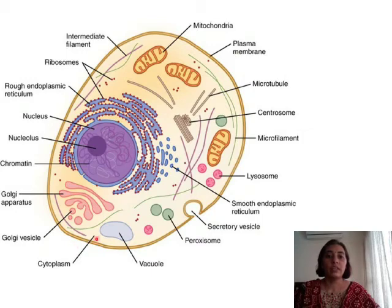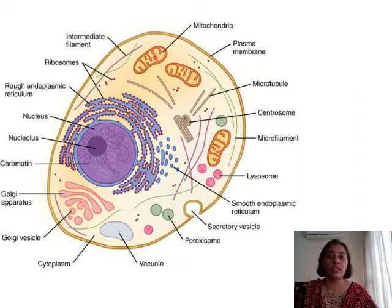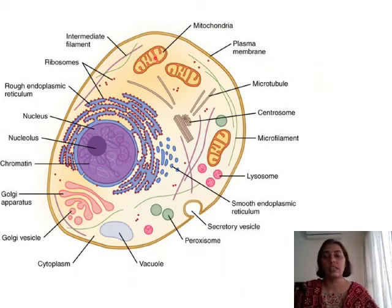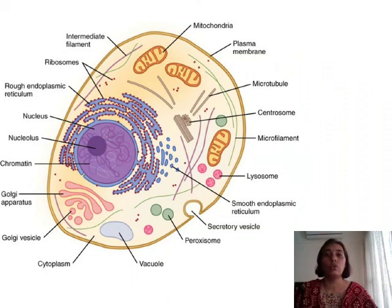The next two steps take place in the mitochondria. You can see the mitochondria are found inside the cell in the cytoplasm — it is one of the cell organelles, and it is here that ATP is going to be released. With that, let us go on to the first step: glycolysis.